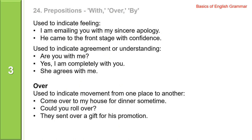With is used to indicate feeling. I am emailing you with my sincere apology. He came to the front stage with confidence. With is used to indicate agreement or understanding. Are you with me? Yes, I am completely with you. She agrees with me.